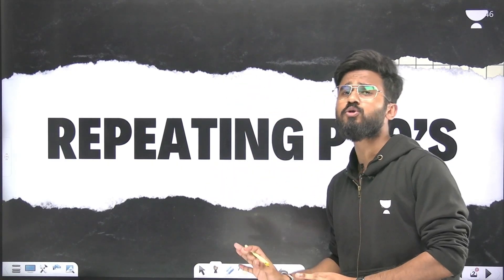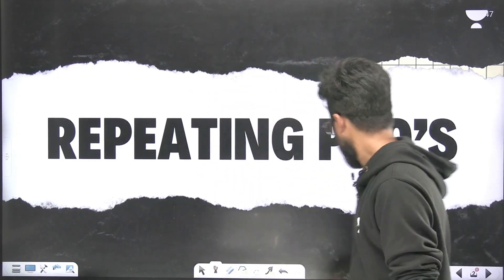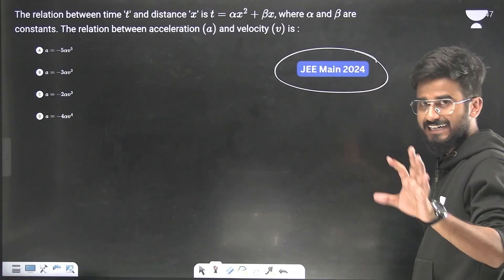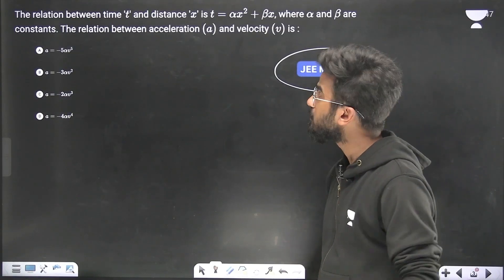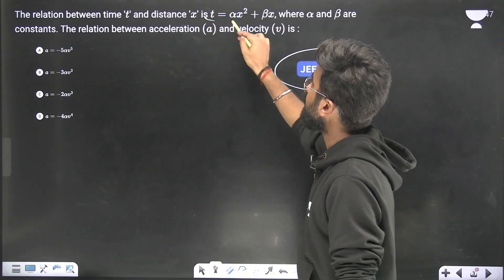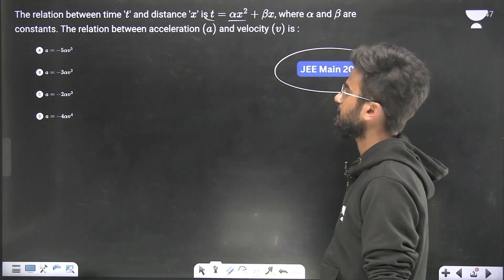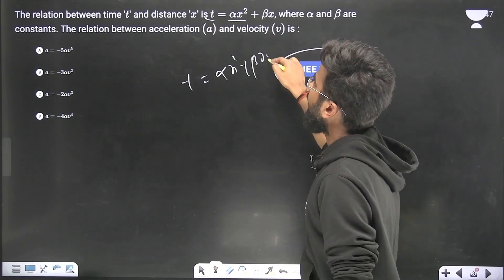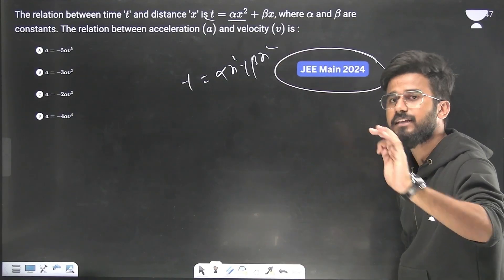So I am going to discuss those PYQs. First of all, what I analyzed, I am going to show you those things. So let us see that there is a particular PYQ from JEE 2024. It simply says that the relation between time t and distance x is given as t equals alpha x squared plus beta x, and we have to find the relation between acceleration and velocity.